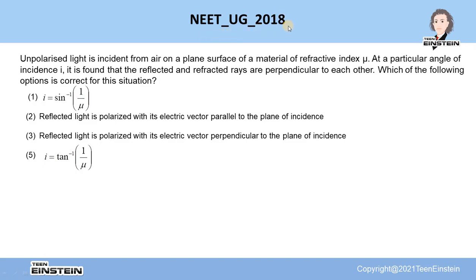Hello students, let us solve a problem from NEET UG paper 2018. In this problem it is stated that unpolarized light is incident from air on a plane surface of a material of refractive index mu.